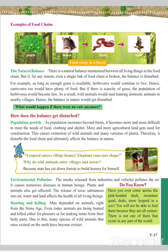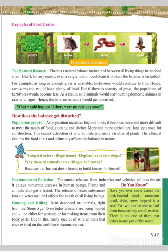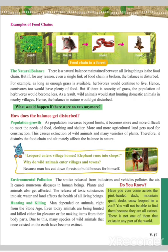What is balance in nature? There is a natural balance maintained between all living things in the food chain, but if for any reason even a single link of the food chain is broken, the balance is disturbed. For example, as long as enough grass is available, herbivores will continue to live, and thus carnivores will also have plenty of food. But if there is a scarcity of grass, the population of herbivores will decrease.